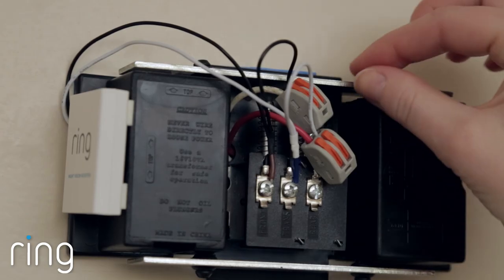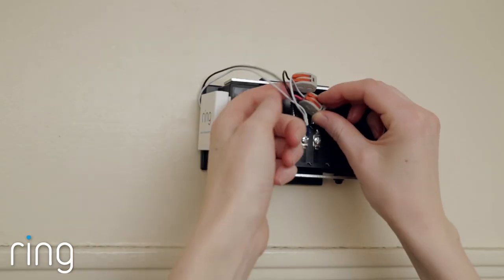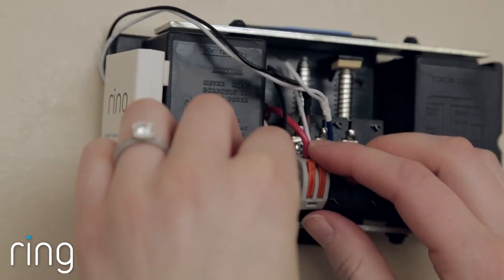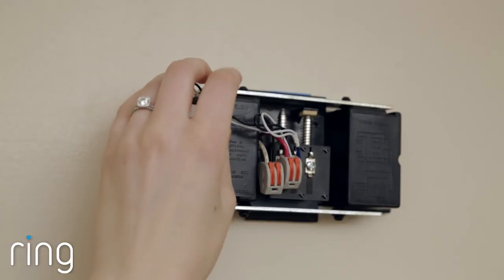If you have a mechanical doorbell, like this one, make sure not to put the kit anywhere where it'll get in the way of the moving parts inside your doorbell.